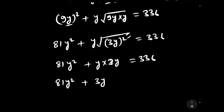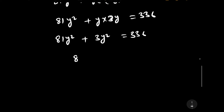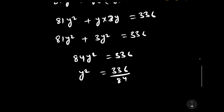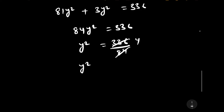This simplifies to 84y squared equals 336. Dividing both sides by 84, y squared equals 336 divided by 84, which equals 4. Therefore y squared equals 4 and y equals plus or minus 2.